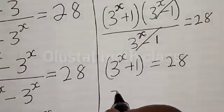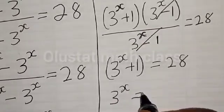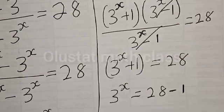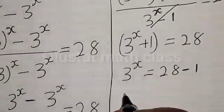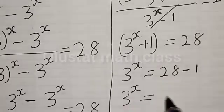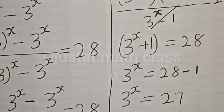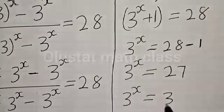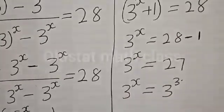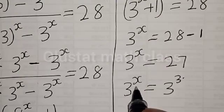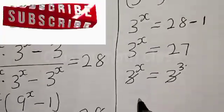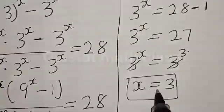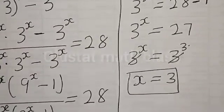Now we have 3 raised to the power s plus 1 is equal to 28. Then 28 minus 1 is equal to 27. So 3 raised to the power s is equal to 27, which is 3 raised to the power 3. We have the same base, so we can equate the exponents. Therefore s is equal to 3. We've gotten the value of s, which is equal to 3.